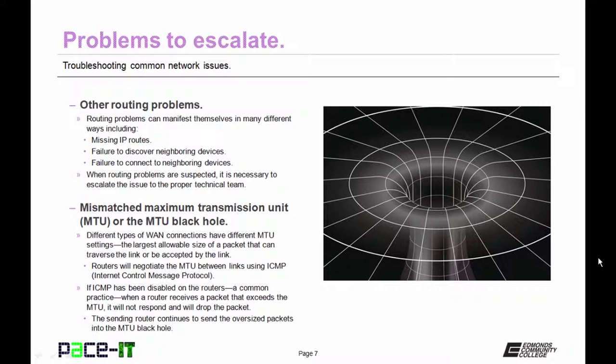There are other routing problems that once discovered should be moved up the chain. Routing problems can manifest themselves in many different ways, including missing IP routes, failure to discover neighboring devices, or failure to connect to neighboring devices once they're discovered. When routing problems are suspected, it is necessary to escalate the issue to the proper technical team.